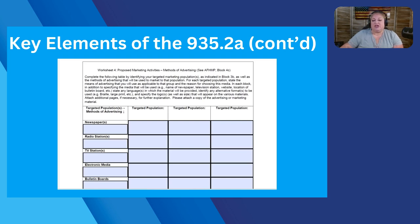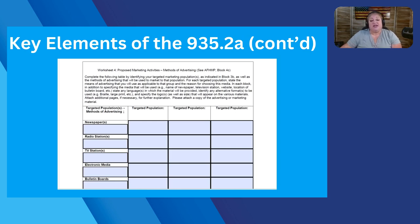You're also going to look at your printed marketing. Not many people use newspapers anymore, but you could still be using newspapers, TV ads, or electronic media — such as a database online, Info Line 211, and things like that. These are all going to be listed here with the targeted population for each different outlet you are using.